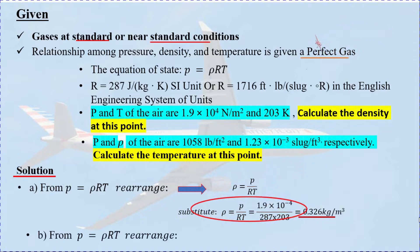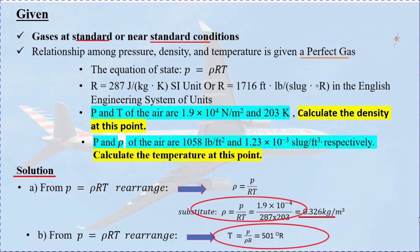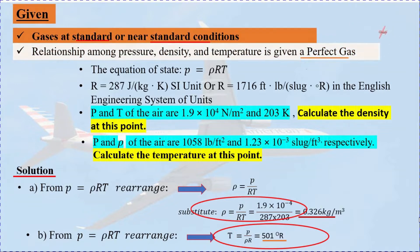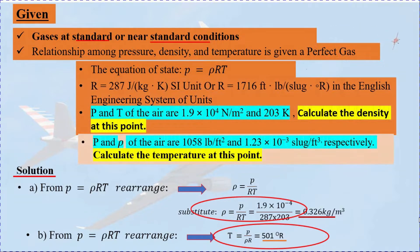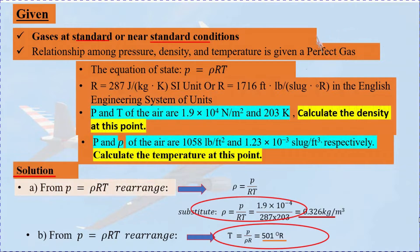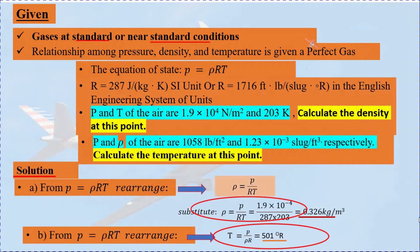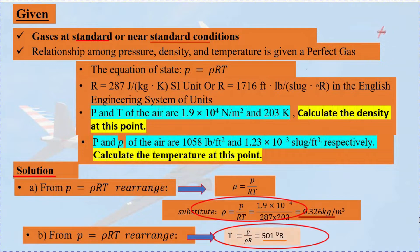For Case B, we are asked to find the temperature at the supersonic wind tunnel test section. From the equation of state P equals rho times R times T, rearranging to find temperature: temperature equals P divided by rho times R. Substituting the numbers, the answer is 501 Rankine.